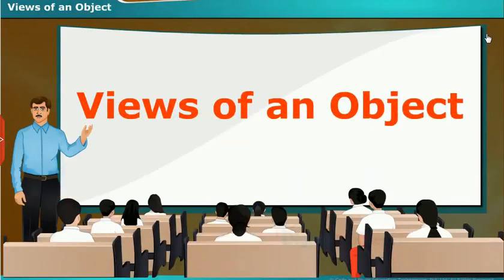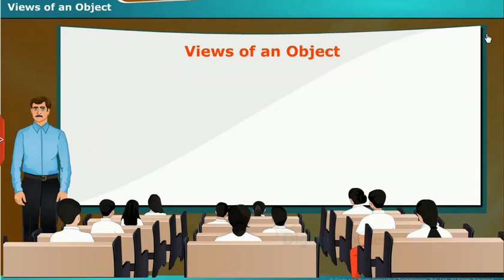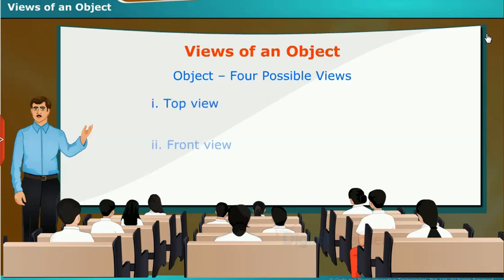Now, we will study about the views of an object. Generally, an object can have four possible views. They are top view, front view, side view, and back view.